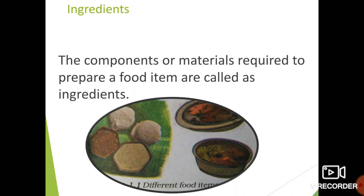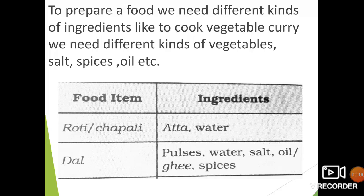In the picture you can observe different food items. To prepare a food we need different kinds of ingredients. For example, to cook vegetable curry, we need different kinds of vegetables, salt, spices, oil, etc.